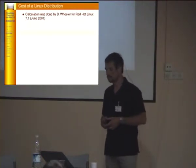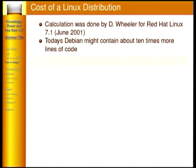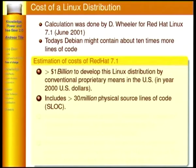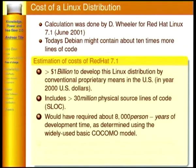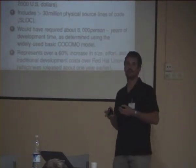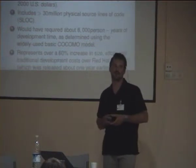If you think of the cost of a Linux distribution — this calculation was done in 2001 for Red Hat Linux 7.1, and Debian might have ten times the lines of code — the estimation showed that $1 billion would be needed to develop this distribution, measured in year-2000 US dollars. It includes 30 million physical source lines of code and would require 8,000 person-years of development time using the COCOMO model. So even if a Linux distribution doesn't cost you any money, a lot of money is involved and somebody has to pay it.